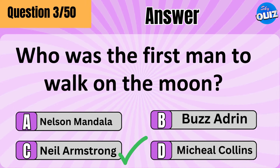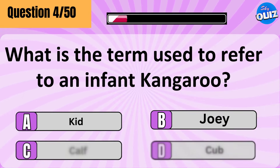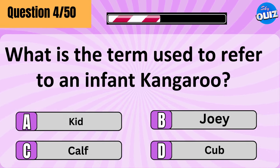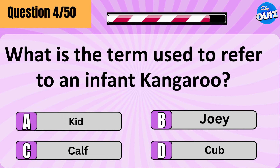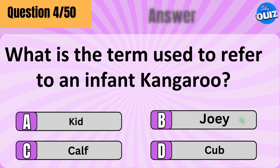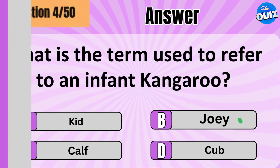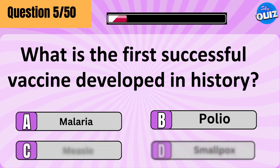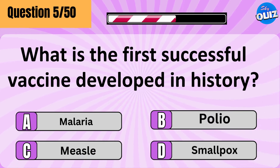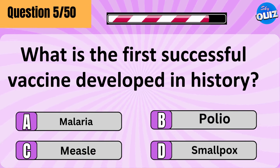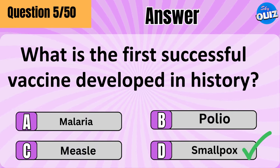Neil Armstrong. What is the term used to refer to an infant kangaroo? Joey. What is the first successful vaccine developed in history? Smallpox.